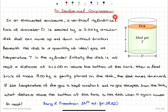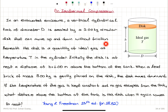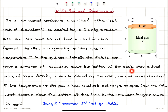An isothermal compression. In an evacuated enclosure, a vertical cylindrical tank of diameter D is sealed by a 3 kilogram circular disk that can move up and down without friction. Beneath the disk is a quantity of ideal gas at temperature T in the cylinder. Initially, the disk is at rest a distance h equals 4 meters above the bottom of the tank.